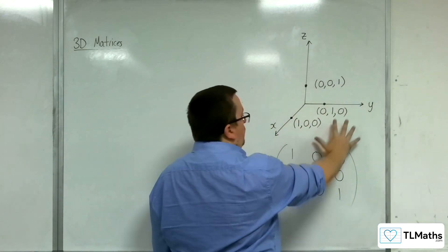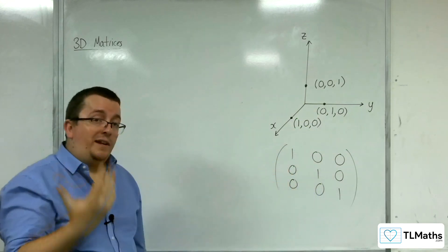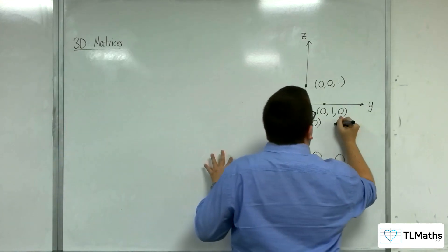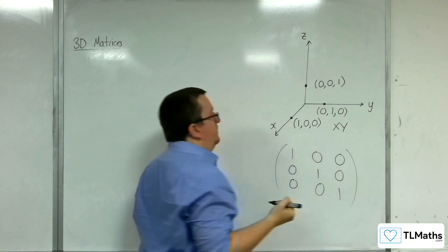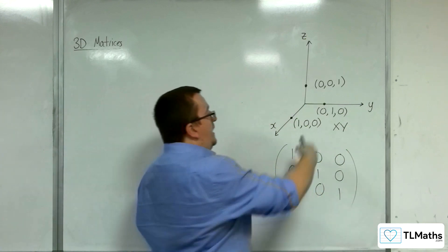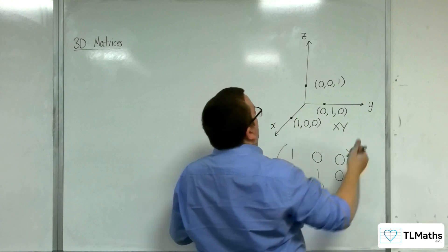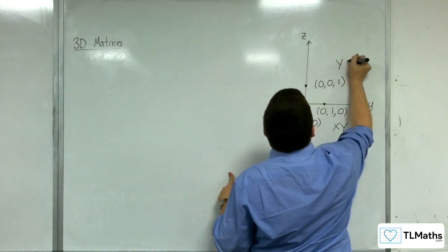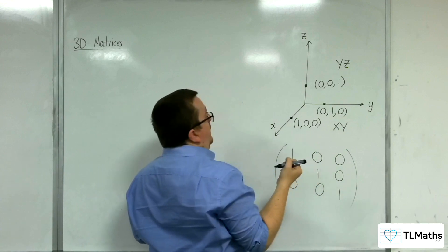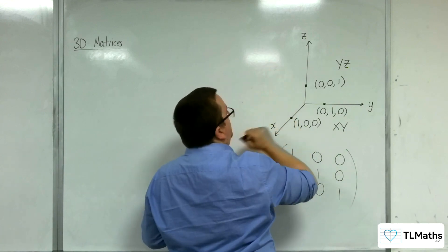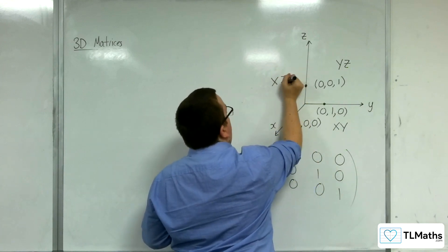We're interested mainly in three of them. This floor, for example, which we could label as the xy plane, because it contains the x-axis and y-axis and not the z. Likewise, this one we could refer to as the yz plane, and this wall could be represented as the xz plane.